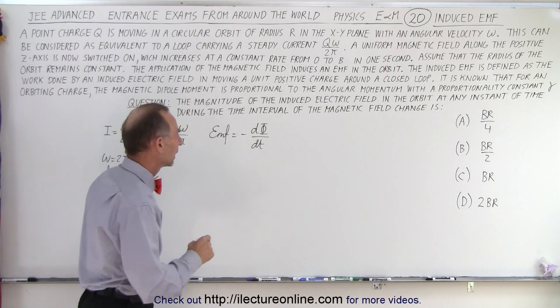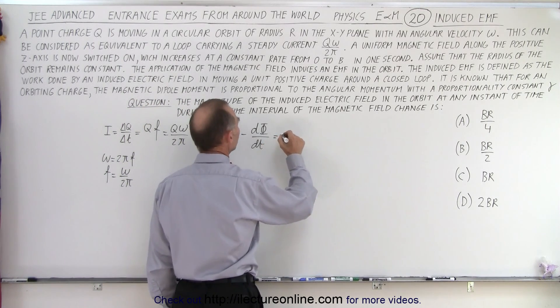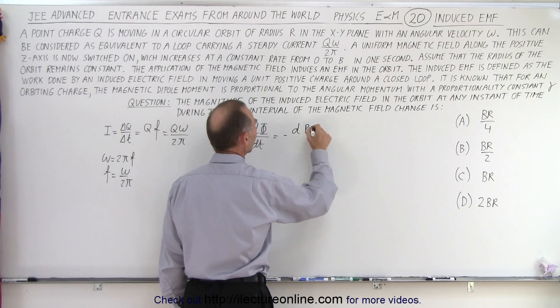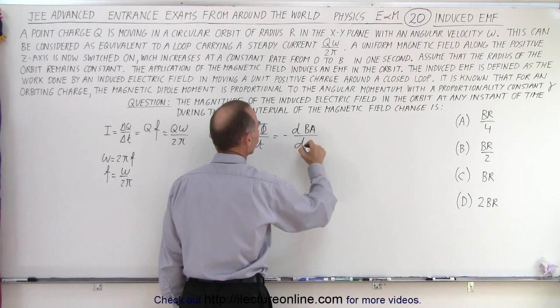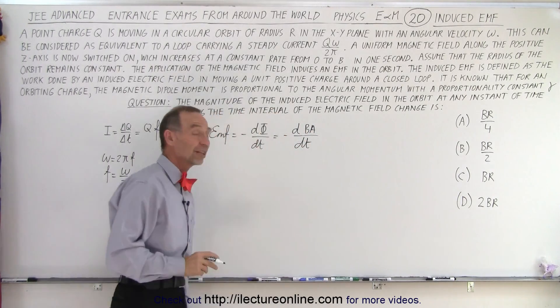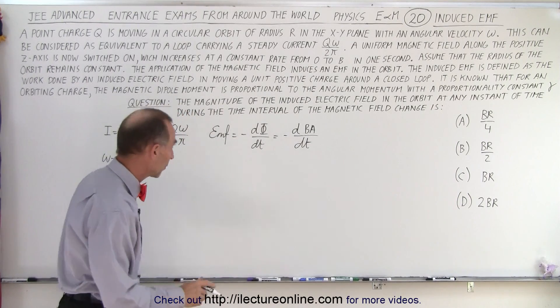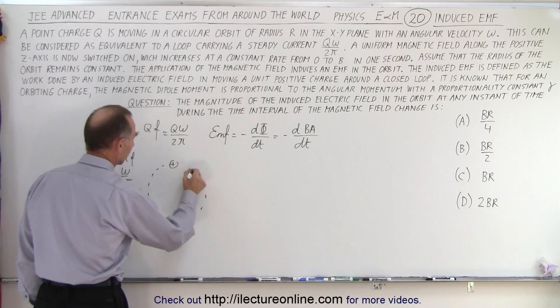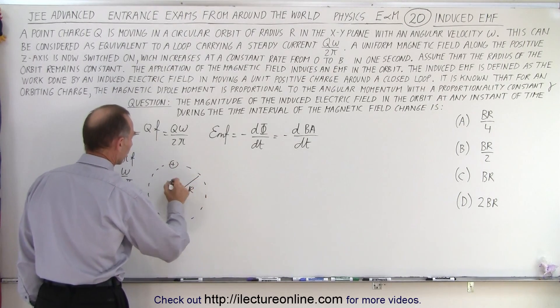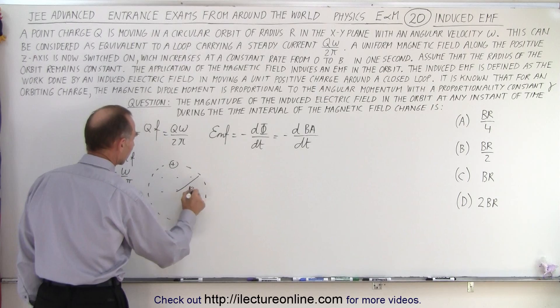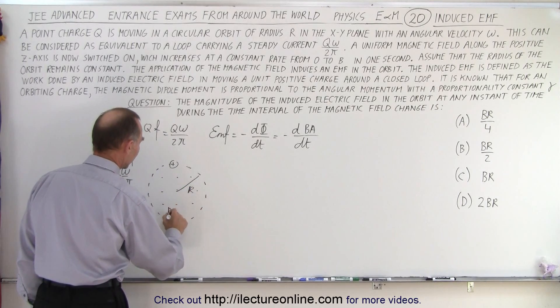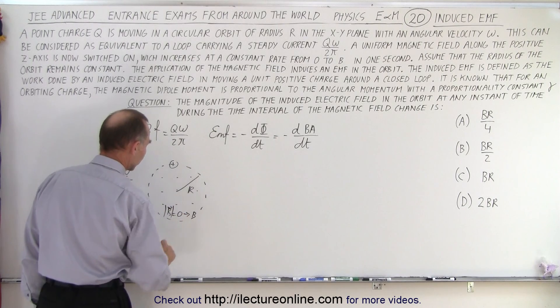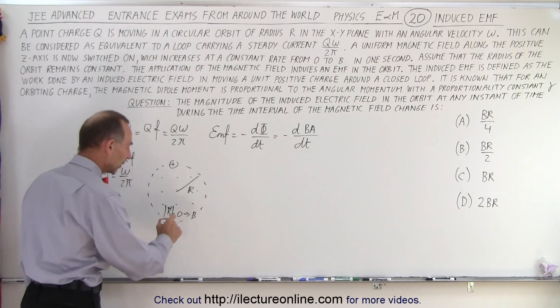And that is equal to the negative d, now the flux is going to be the product of the B field times the cross-sectional area and we're going to differentiate that with respect to time. Now remember we had a singular charge that's going around in a circle of radius r with a changing magnetic field, a changing B field that goes from 0 to B in one second.